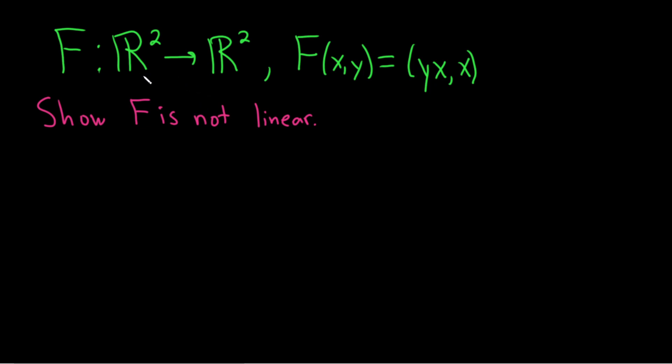In this video, we have a function from R squared to R squared, and it's given by F of x, y is equal to yx, comma, x. And the question is to show F is not linear.